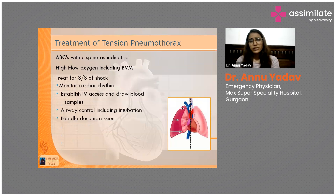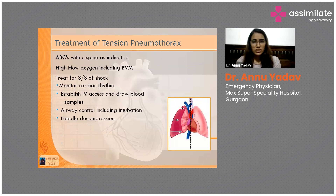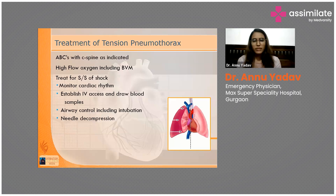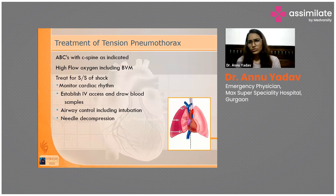The first priority is ABC with C-spine stabilization — airway, breathing, circulation. You can give high-flow oxygen to the patient with bag-mask ventilation, high-flow nasal mask, or a non-rebreathing mask.